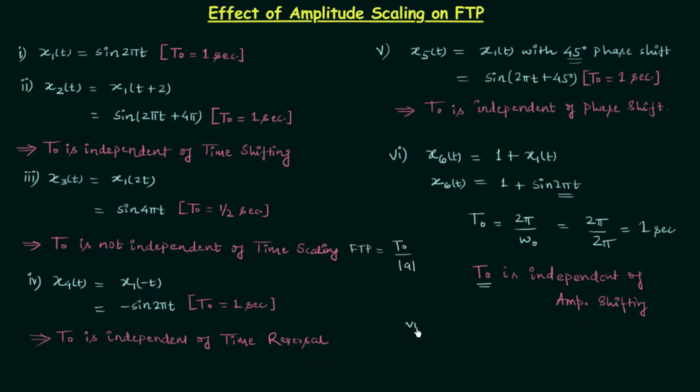Now we will take our 7th signal, x7(t), and it is twice of x1(t). It is twice of our original signal x1(t) which is sin(2πt). So x7(t) is simply twice of sin(2πt).